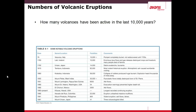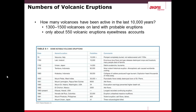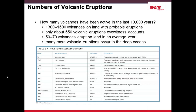So how many volcanoes have been active in the last 10,000 years? There have been approximately 1,300 to 1,500 volcanoes on land with probable eruptions. There are only about 550 volcanic eruptions with eyewitness accounts, and 50 to 70 volcanoes erupt on land in an average year. Of course, there are many more volcanic eruptions which occur in the deep oceans.